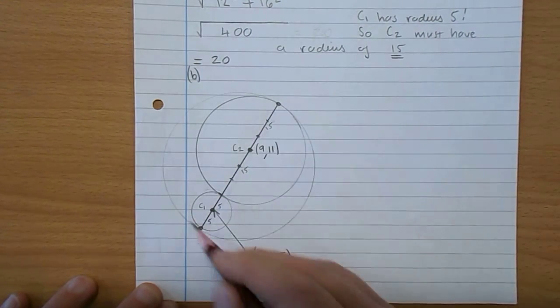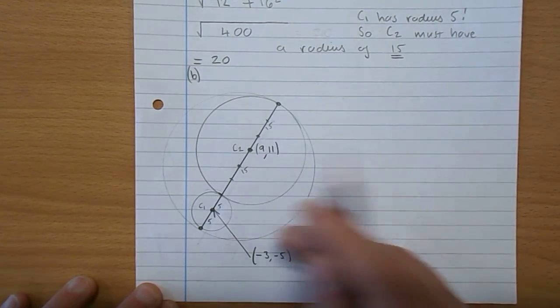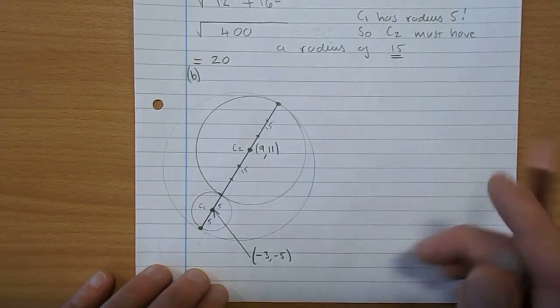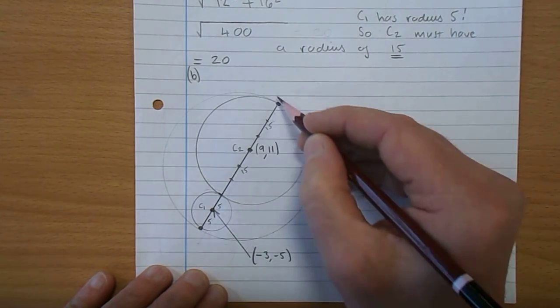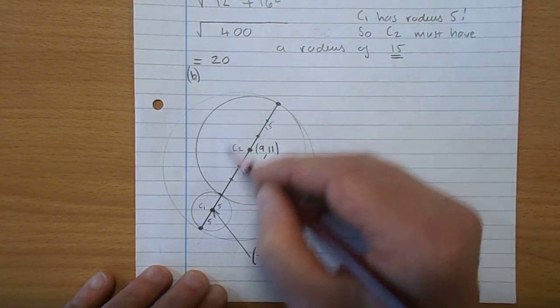there's C2. And here's this bigger circle, C3. Now, just to show you, they obviously asked for the equation of C3. So here it is here. We want the equation of this bigger circle here.